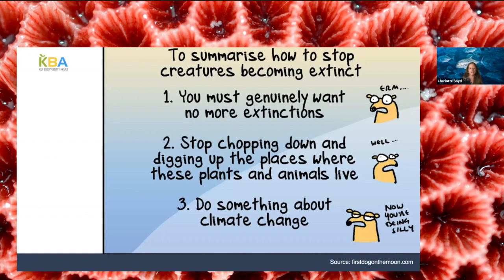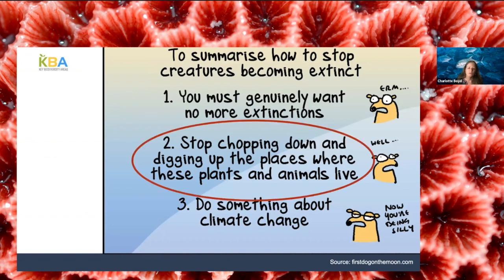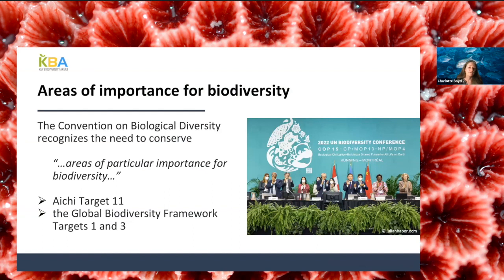Just this weekend, the Guardian newspaper had a cartoon putting forward three easy steps to stop species becoming extinct. The second step was to stop chopping down and digging up the places where these plants and animals live. As we're all well aware, safeguarding habitat is an essential conservation strategy for most threatened and geographically restricted species, and there are many places where habitat loss or other site-based pressures threaten multiple species at the same site.